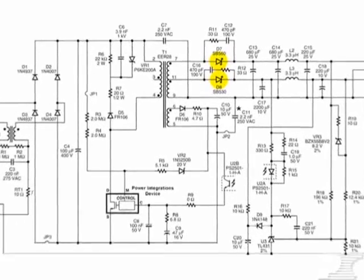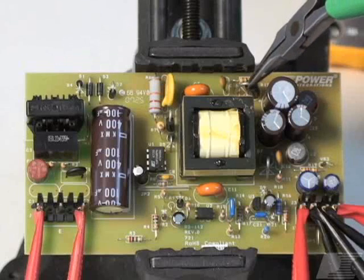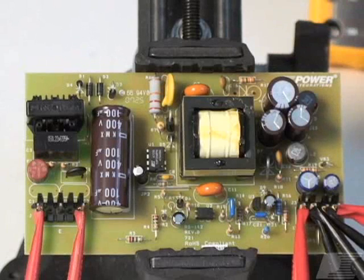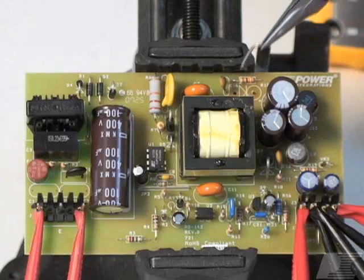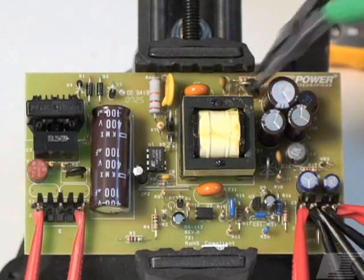If your design provides multiple outputs, first check that all the output diodes have been inserted in the correct orientation. If not, remove them from the board and replace them with new components before retesting your design.